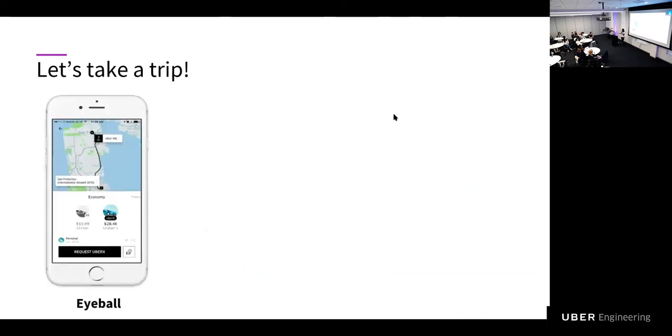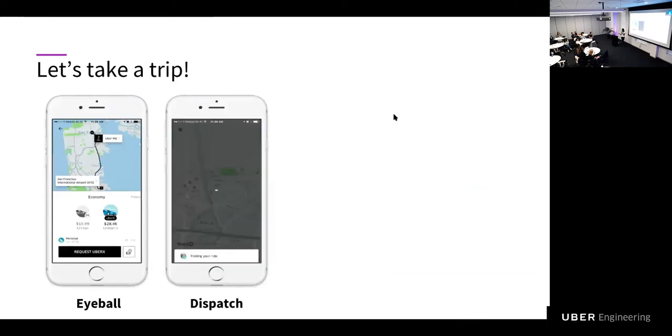We first open the app, type our destination. We see an eyeball ETA, which is the two minutes black square we see. And then we see a fare and we see a time to destination. All these three numbers are powered by ETAs. And then we see the dispatch screen where you see a bouncing ball where the dispatch team is trying to find the best car to pick you up. And here again, we use ETAs to find the best possible car to pick you up to minimize your waiting time and travel time.